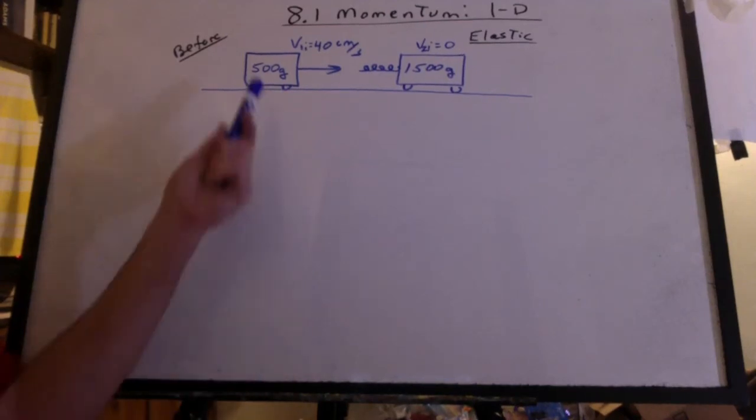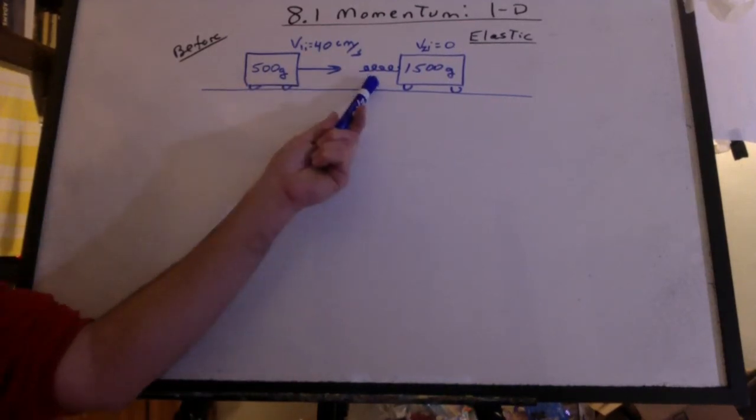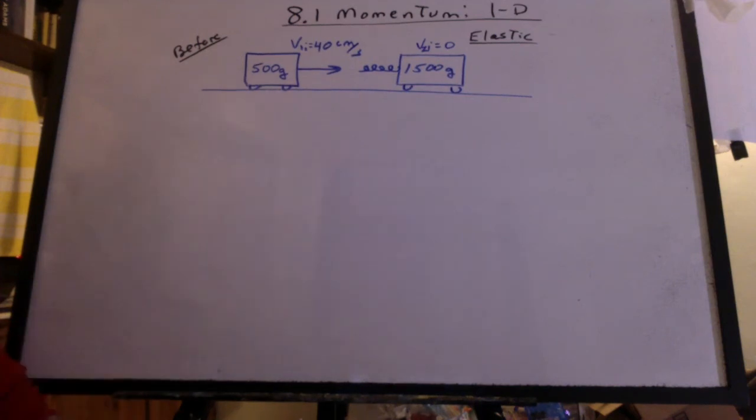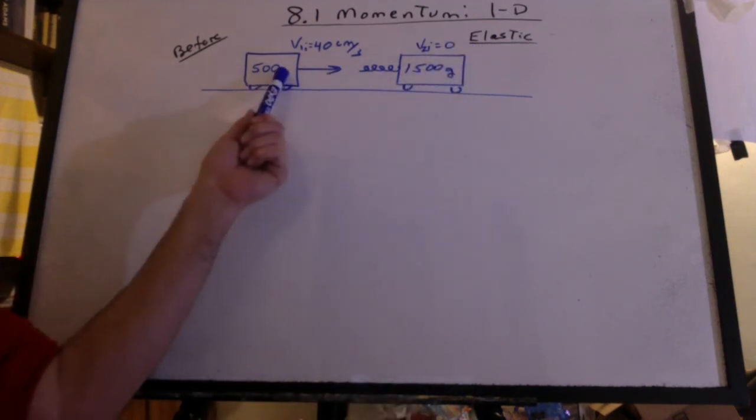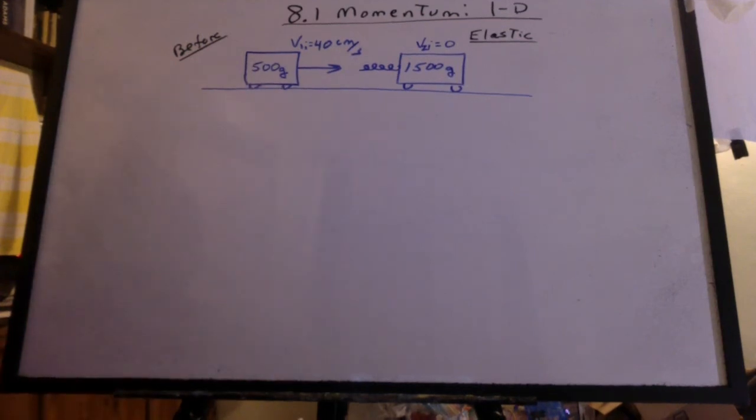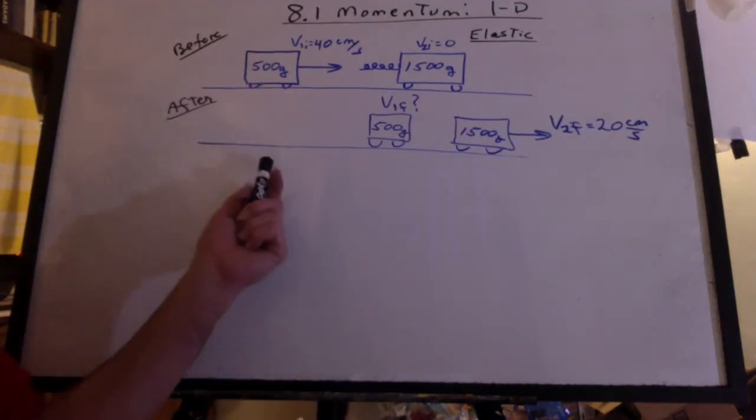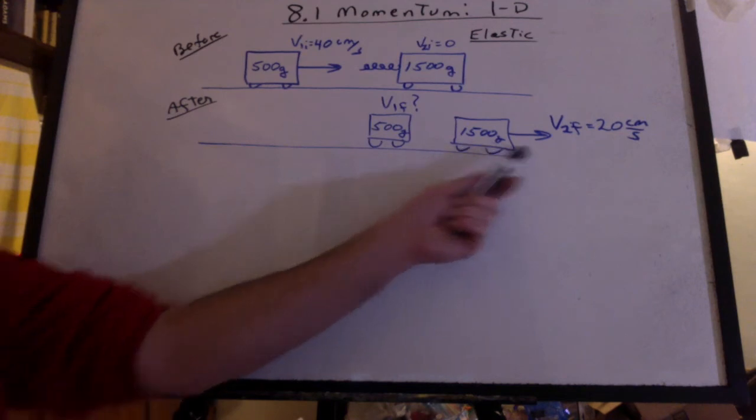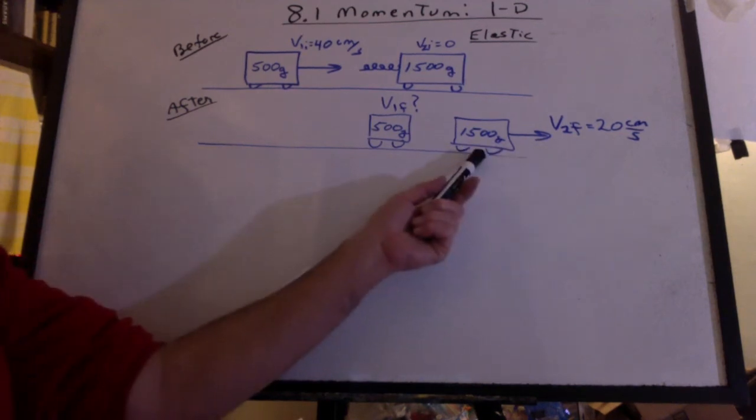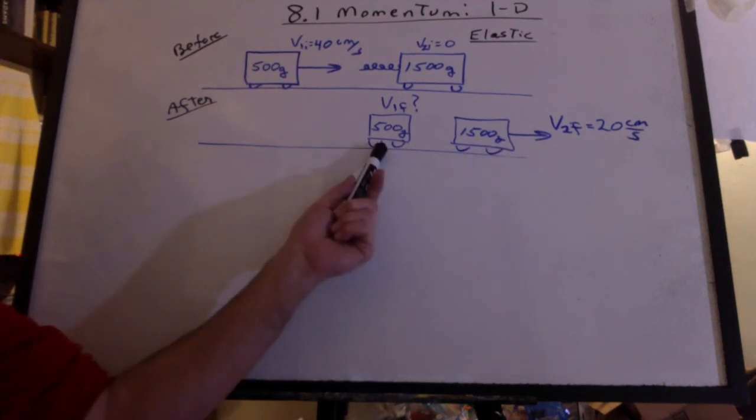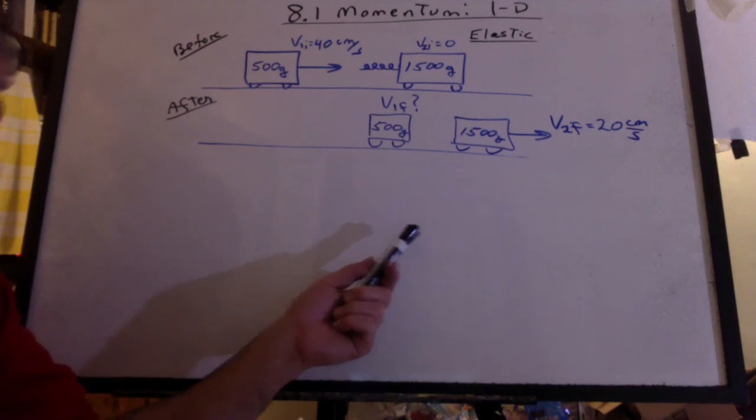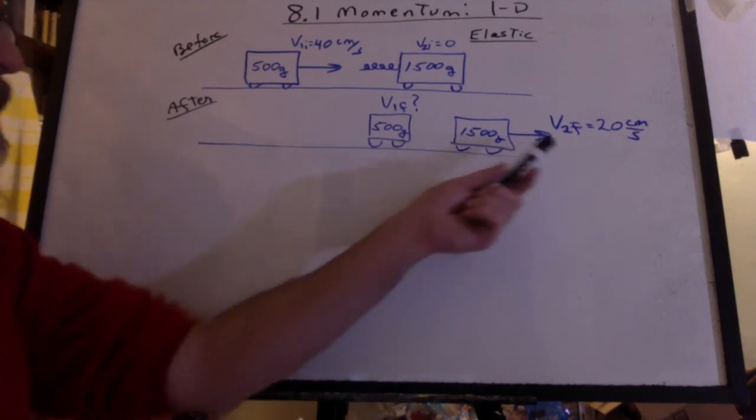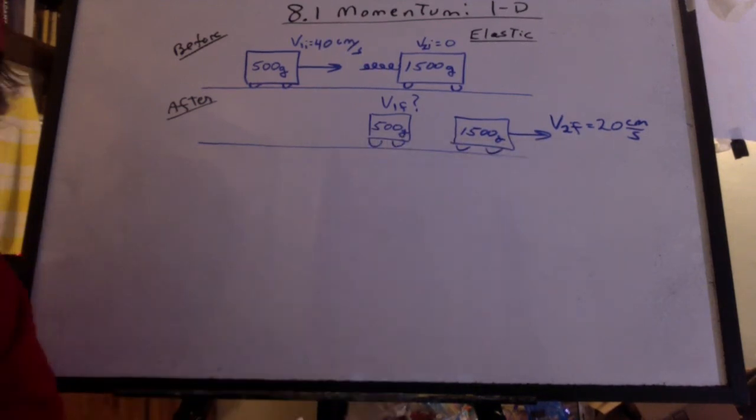Now we have the same experiment, but this time we have a spring in between these carts, which makes the collision an elastic collision. This one's at rest and this one's coming in at 40 centimeters per second. Now let's say after the collision, we observe this cart moving to the right at 20 centimeters per second. What will be the velocity of this one? Now really, we have two unknowns in an actual experiment, but hey look, we're going to give you one, you find the other, to make life a little easier for you.